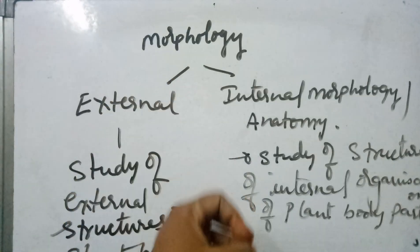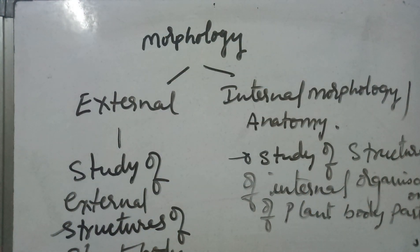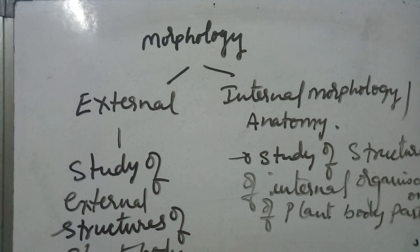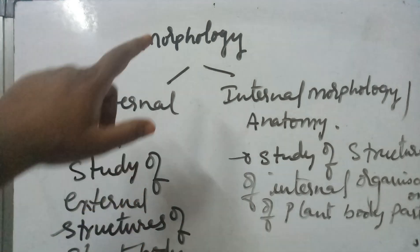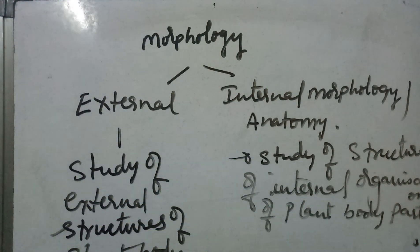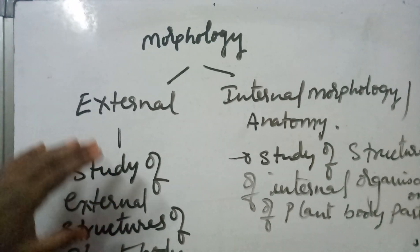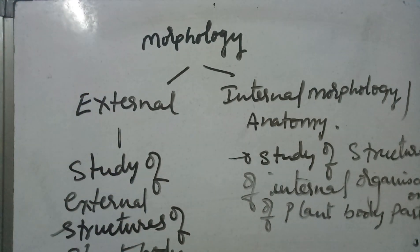Anatomy is the study of internal organization — how cells are arranged in a tissue, how a tissue is formed, how many tissues are present, and how they are organized in an organ. If it deals with plant internal parts, it is known as plant anatomy. So in morphology, we have two branches: external morphology and internal morphology. In external morphology, we will discuss the external structures of the plant body, including important structures like root and stem.